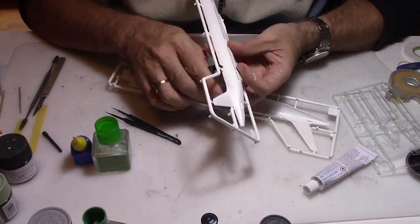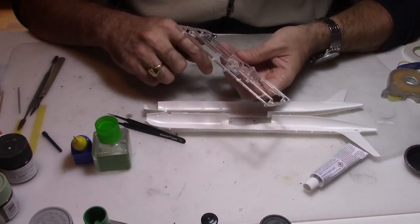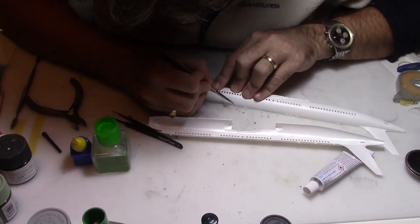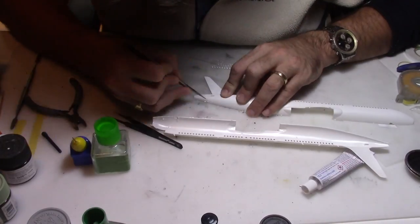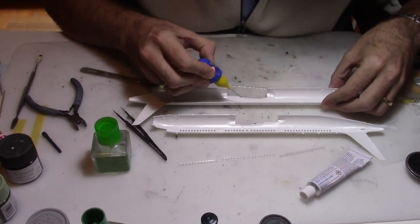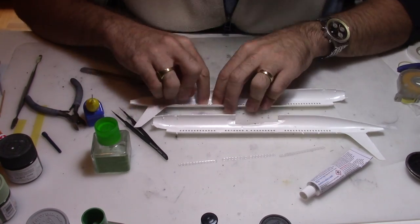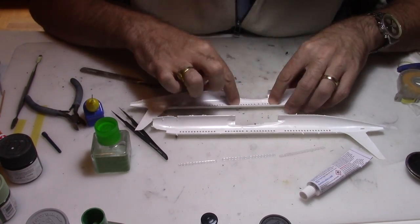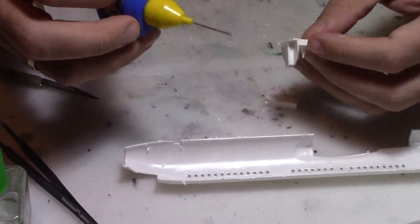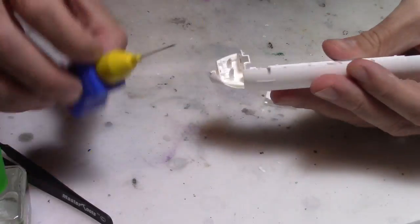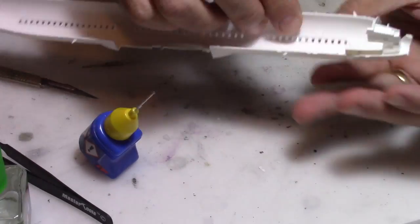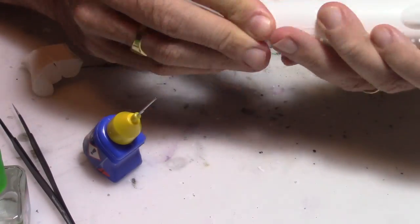We're going to start this build by preparing the fuselage. Initially we're going to prepare the fuselage and passenger windows. We're going to prepare all the parts and glue the passenger windows inside the fuselage using Revell glue. When this is done we're going to assemble the cockpit, but I'm not going to make any details. I'll just use decals for the windscreen and passenger windows.